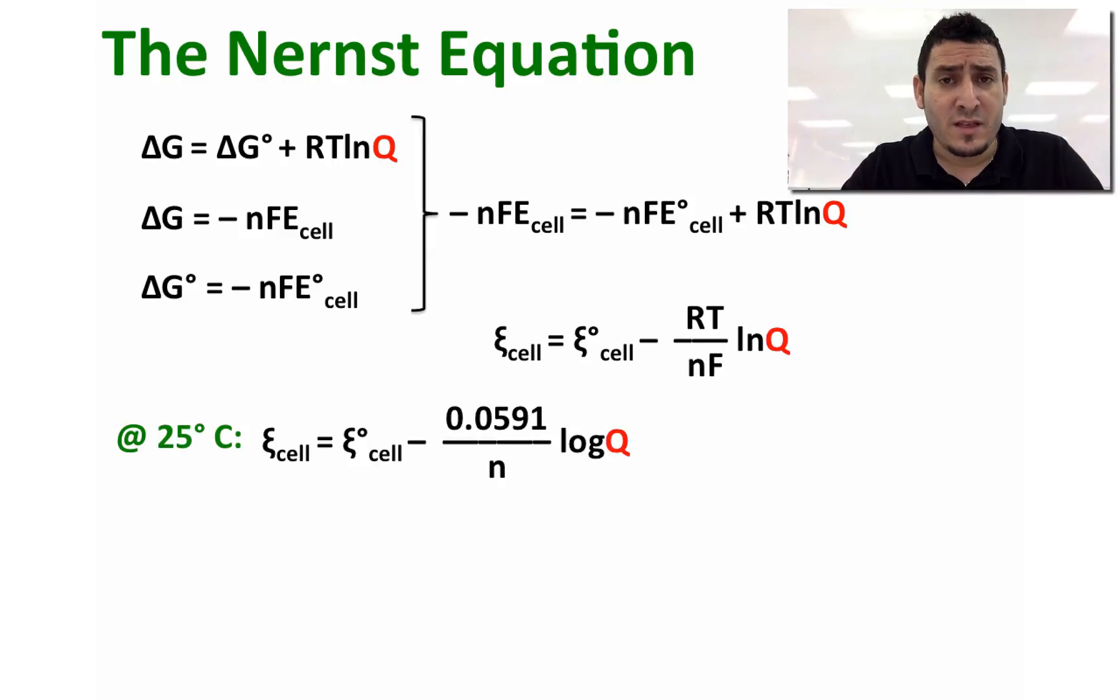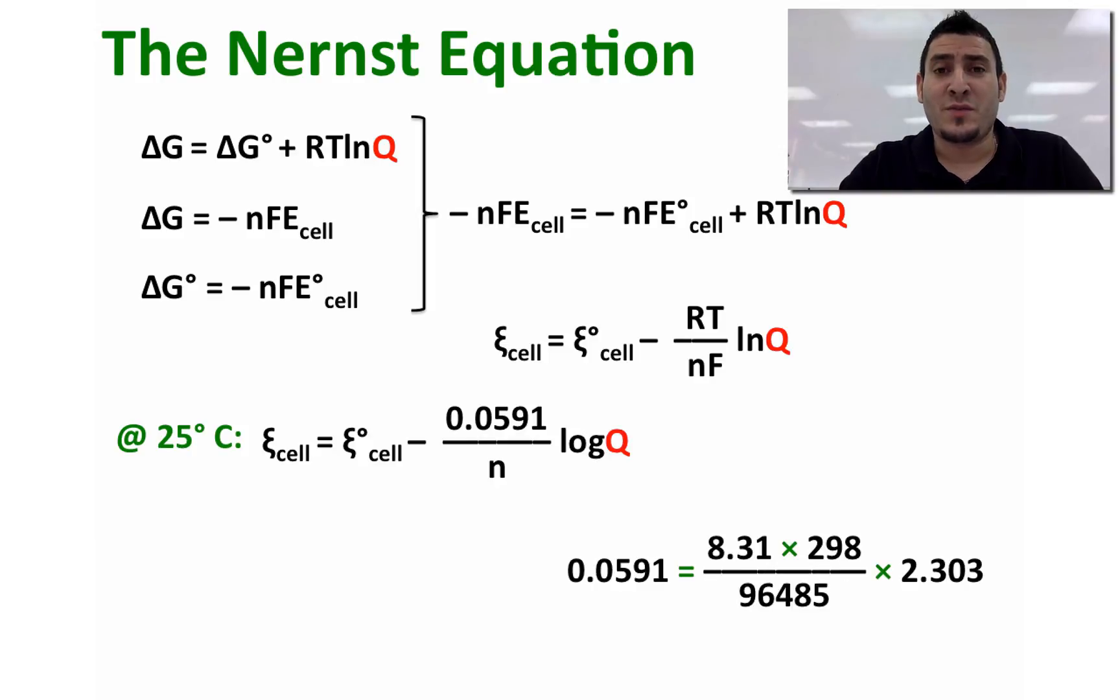At 25 degrees Celsius, this equation can be modified to give E_cell = E°_cell - (0.0591/n) log Q. The 0.0591 value is coming from replacing R, T, and F by their values. The 2.303 number is coming from conversion of natural log to log base 10.